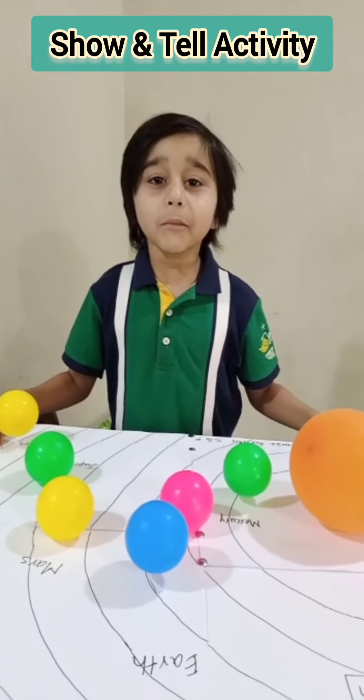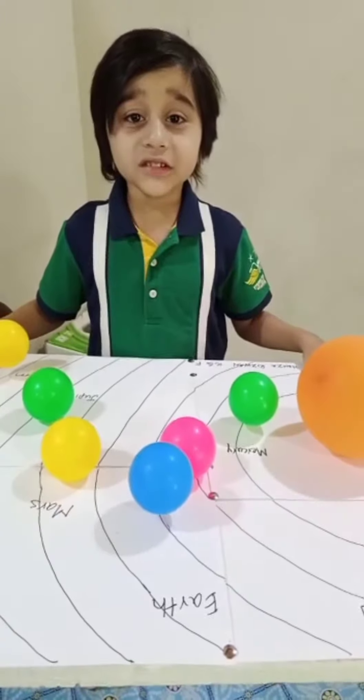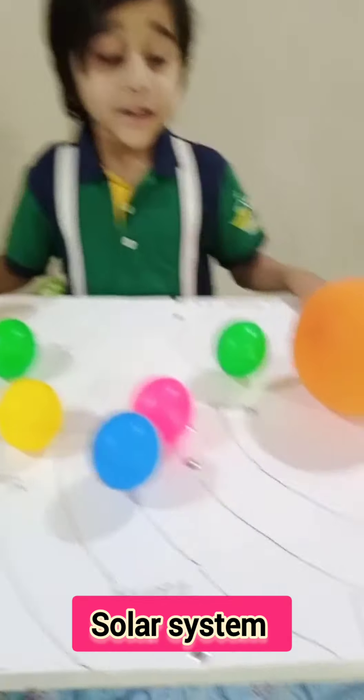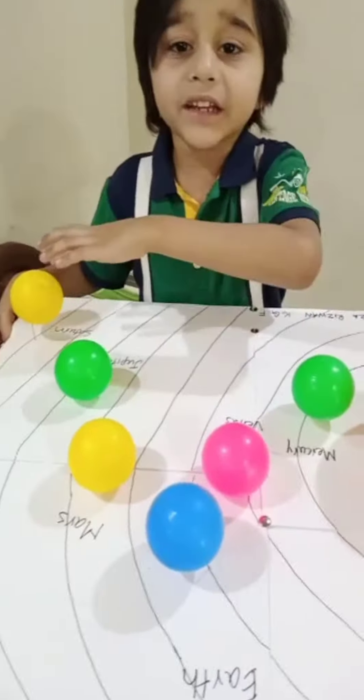Today I am going to tell you about the solar system. This is a solar system and it is a big sun and there are 8 planets.